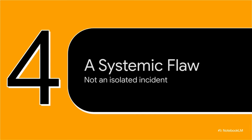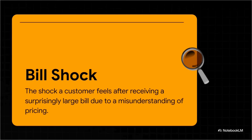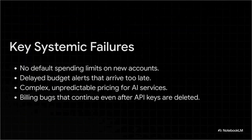This is where the story gets bigger than just one guy's terrible week. His case isn't some weird one-off fluke — it's actually a perfect example of a huge, systemic flaw in pay-as-you-go cloud services that can be a real trap for everyday users. There's actually a name for this in the industry: bill shock. It's that heart-stopping moment of panic when you open a bill and it's 10, 100, or 1,000 times bigger than you ever expected — usually because the pricing was super confusing or you used something by accident.